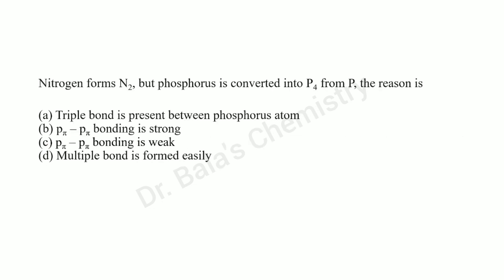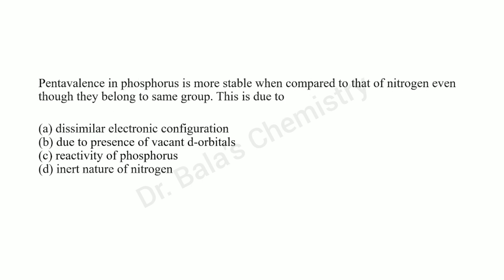Nitrogen forms N2, but phosphorus is converted into P4. The reason is that nitrogen exists in N2 form due to the pπ-pπ bond. Pentavalence in phosphorus is more stable compared to that of nitrogen, even though they belong to the same group.